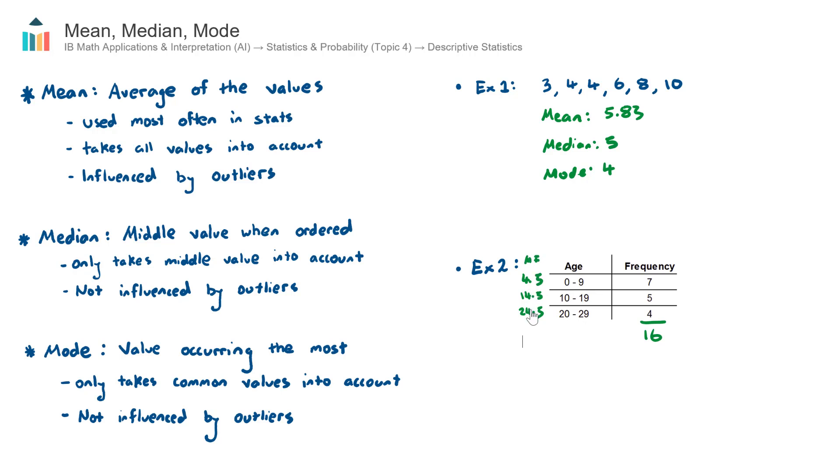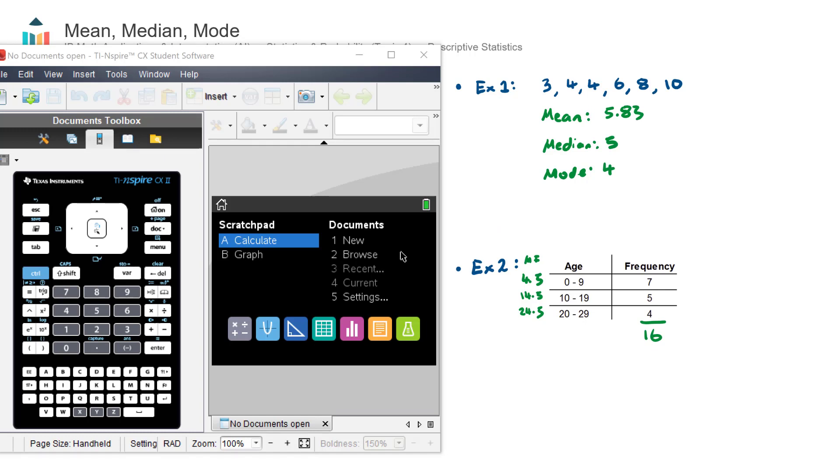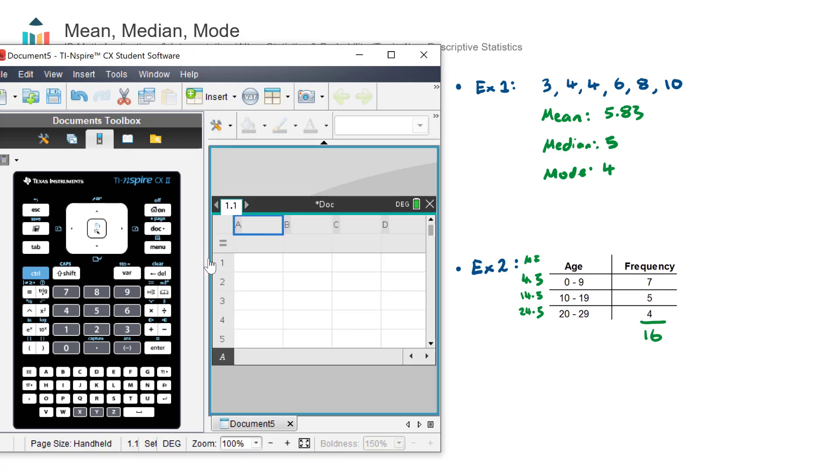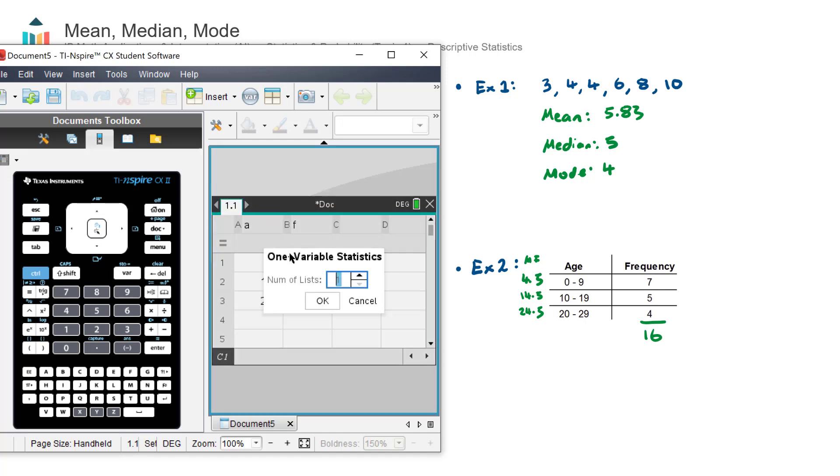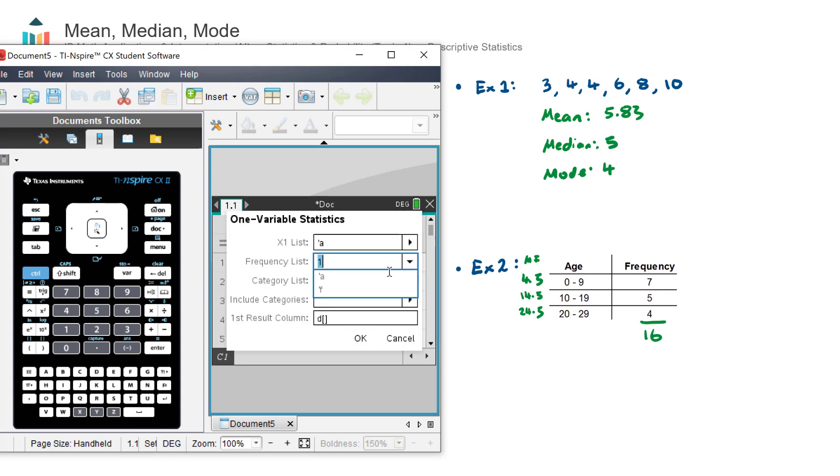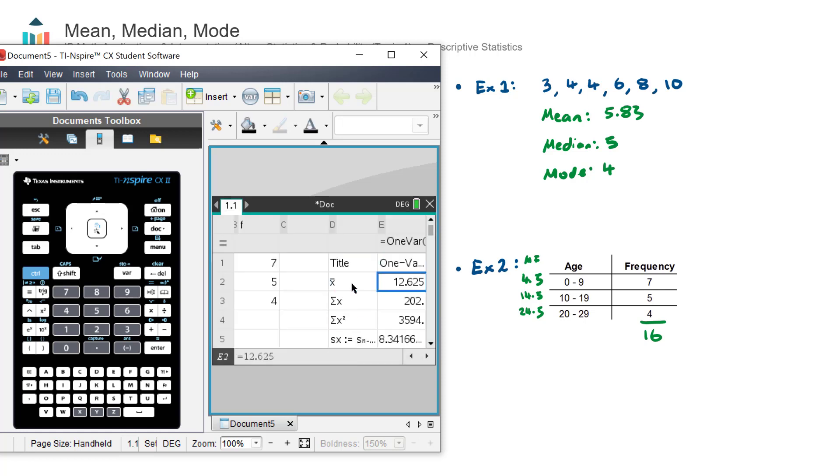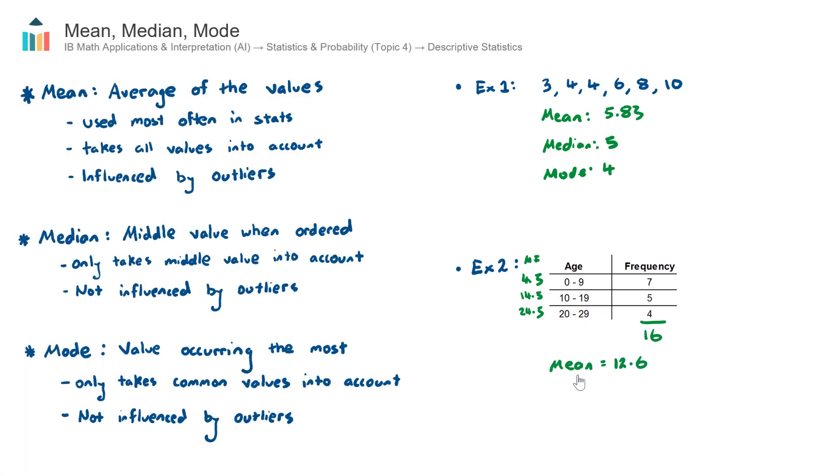Once we have our mid-intervals, we can use our calculator to find the mean estimated age of these 16 people. We go into the statistics section, this green icon here. I'm going to label my first column A for age and my second column F for frequency. I'm going to enter my mid-intervals: 4.5, 14.5, and 24.5, and then the associated frequencies: 7 people, 5 people, 4 people. Let's go to the next column and perform a one variable statistic calculation. Stat, calculation, one variable. My x list is my age, my frequency list is my frequency. This first number here is the estimated average age, which is my mean, 12.6.